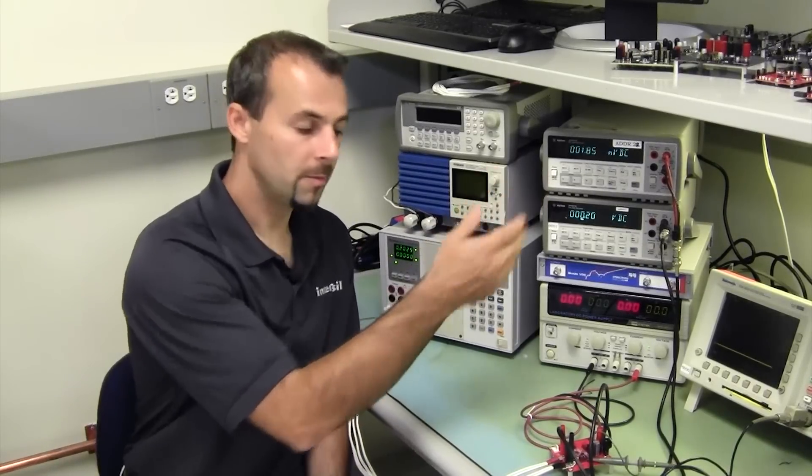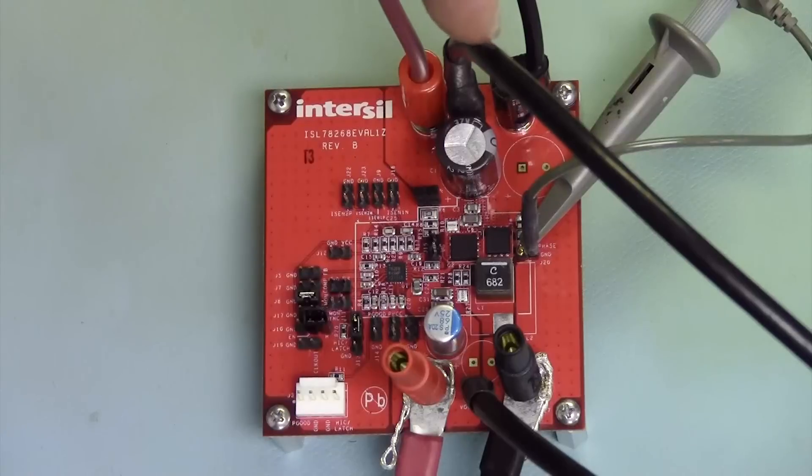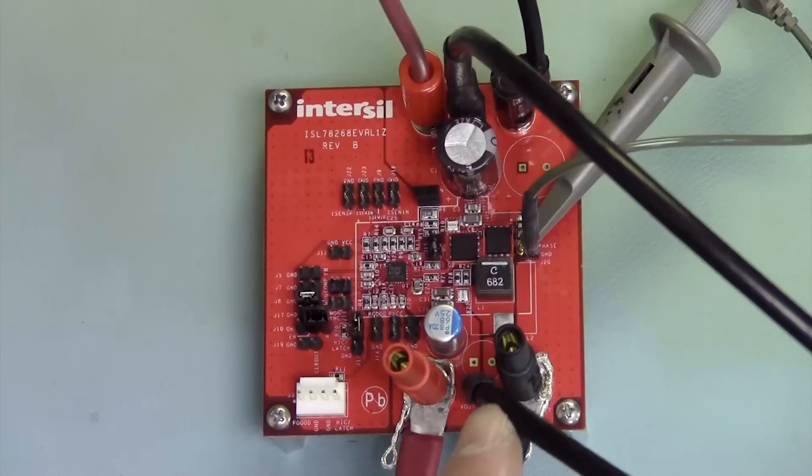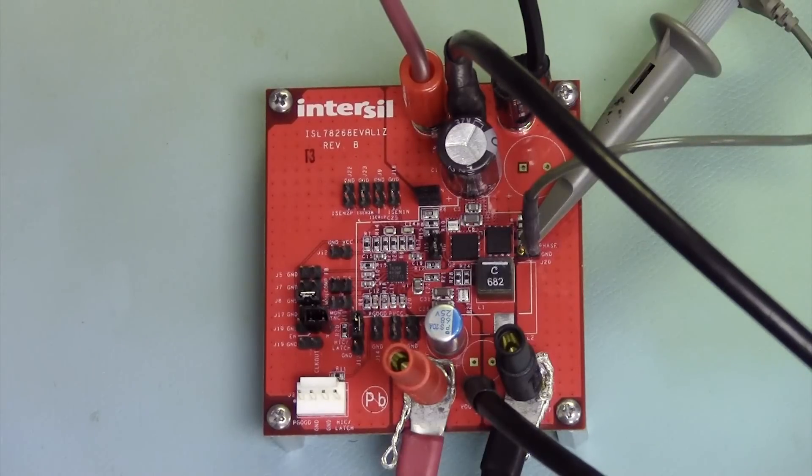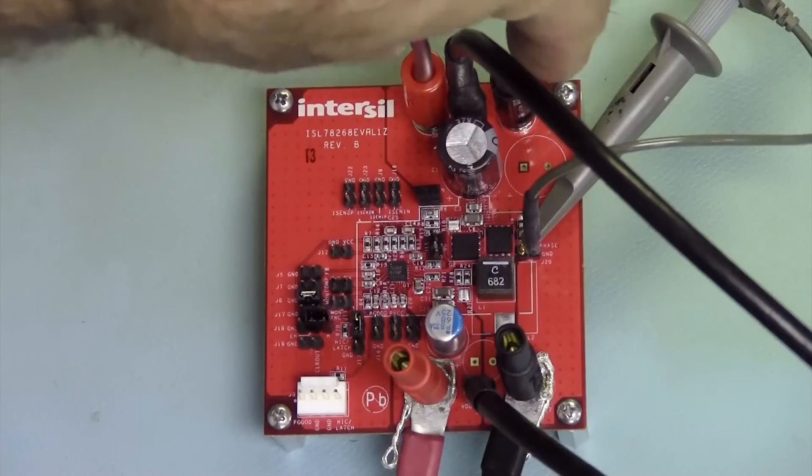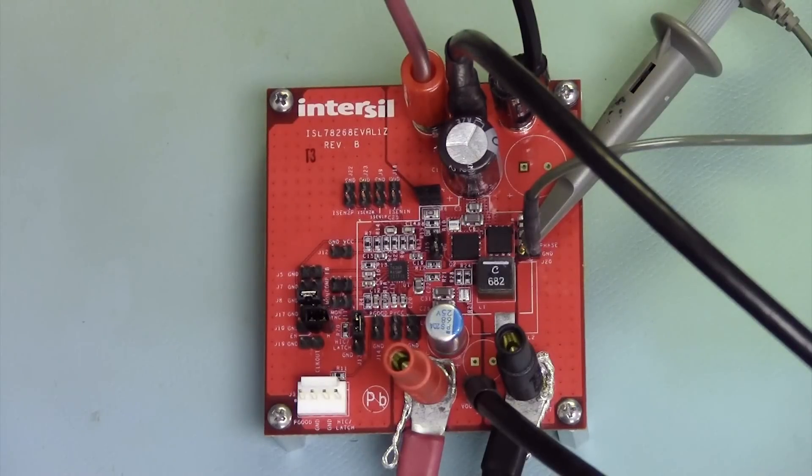Then I connected my upper meter to the input voltage monitoring test point. And I connected my lower meter to the output voltage monitoring test point. Then I connected my supply to the input voltage and my load to the Vout terminals.